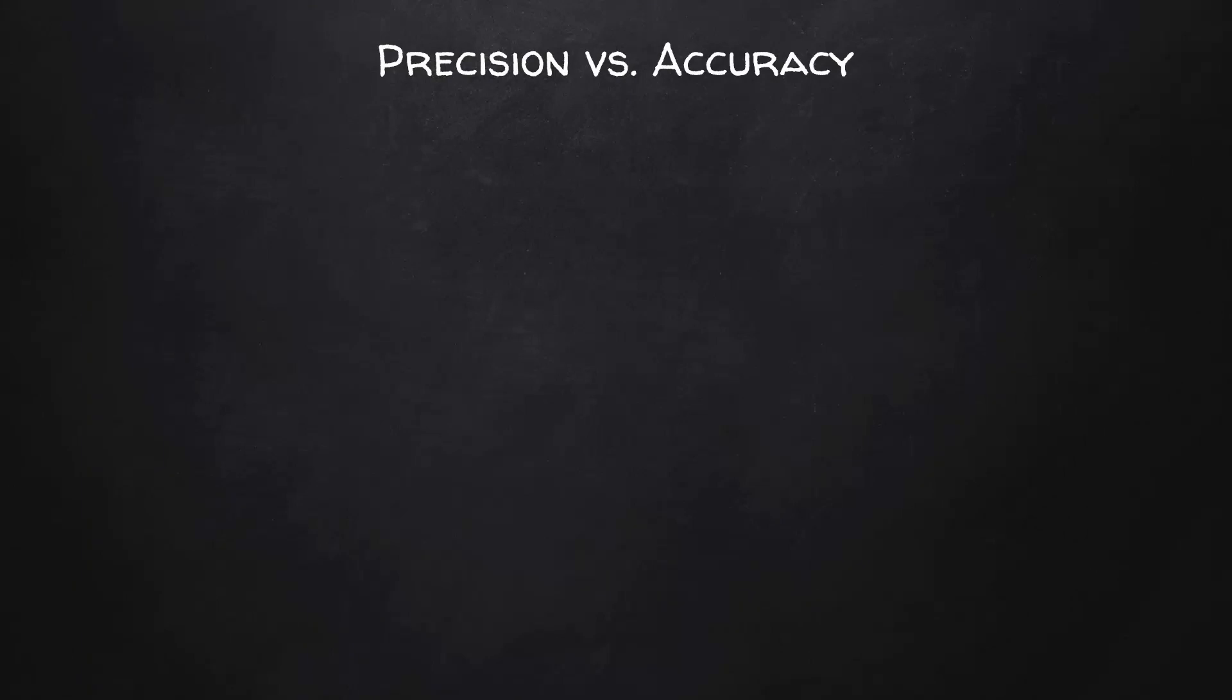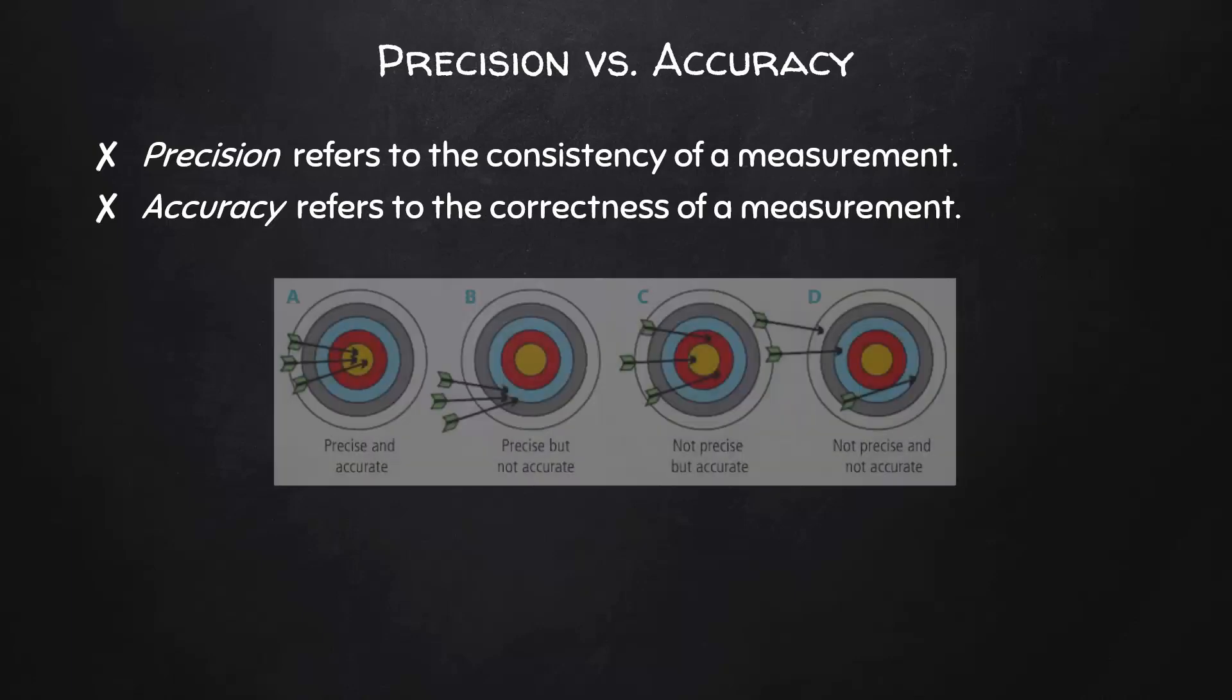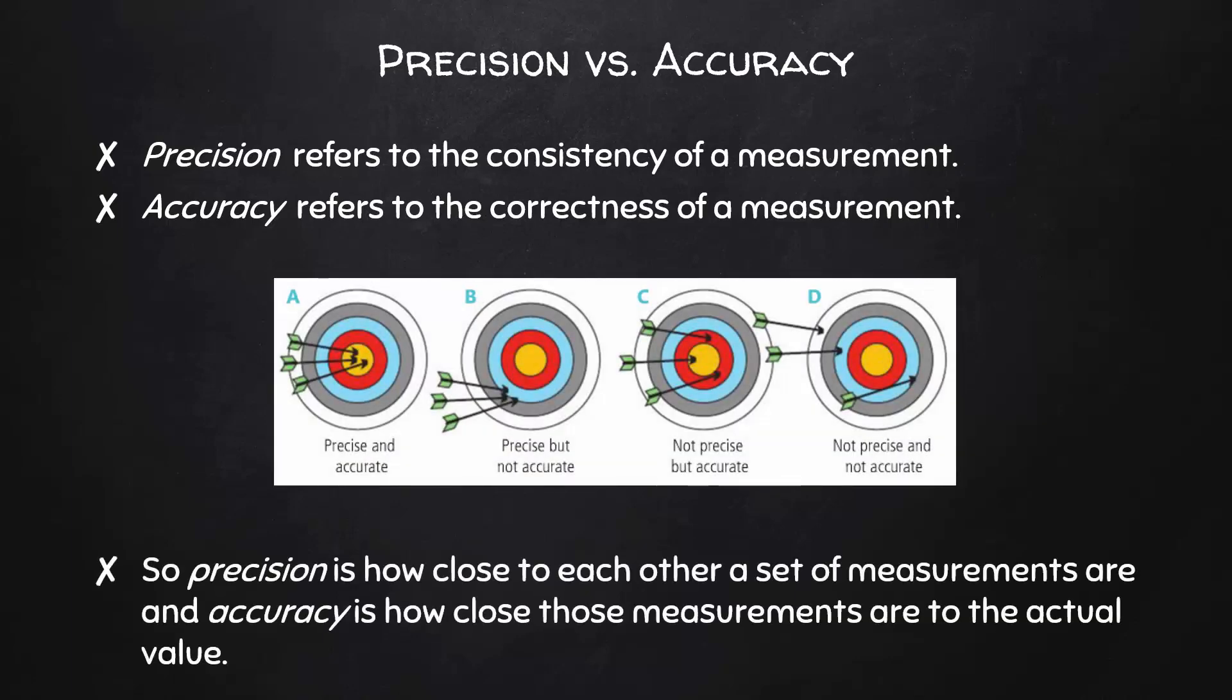For the purpose of evaluating the quality of our measurements, it is important to understand the difference between precision and accuracy. Precision refers to the consistency of a measurement. Precision is how close to each other a set of measurements are, and accuracy is how close those measurements are to the actual value.